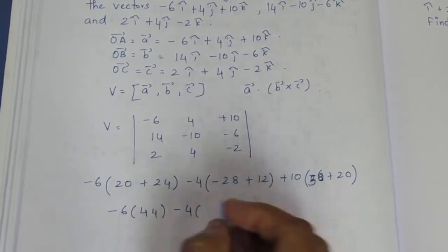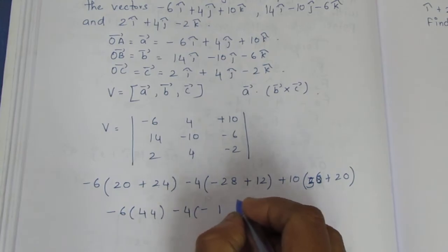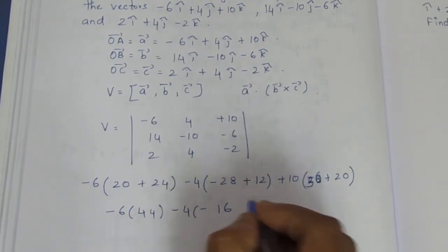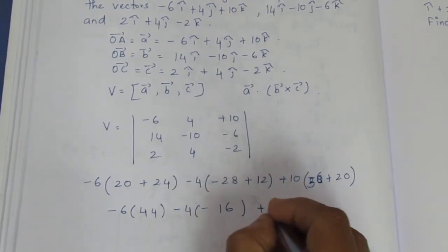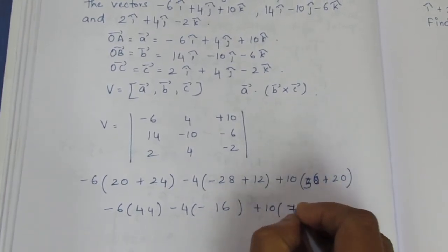Minus 4... greater number sign minus, so it is 4 times 16 plus 10, this is 2.